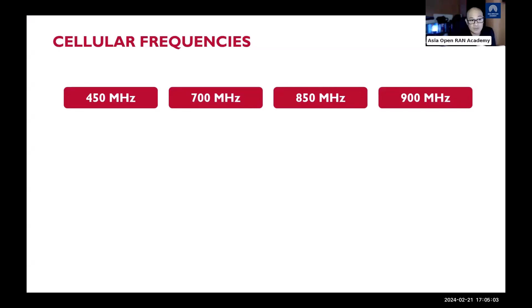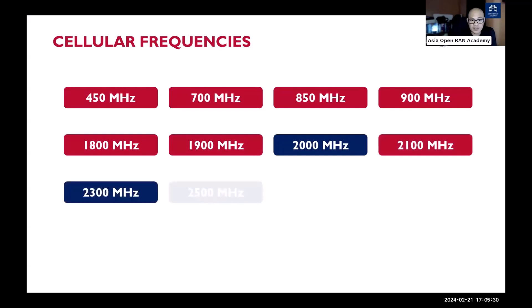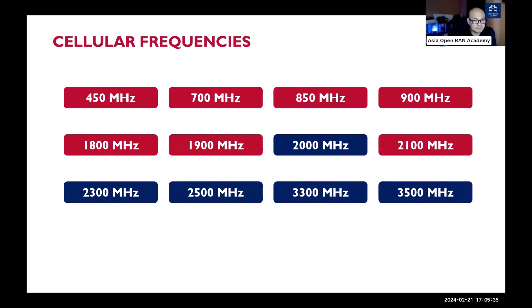Notice the difference between 450 MHz and 90.7 MHz. We also have 1800 MHz, 1900 MHz, 2000 MHz, 2100 MHz, 2300 MHz, up to 3500 MHz in the mid band. Red boxes represent Frequency Division Duplex (FDD) where uplink and downlink are separated by frequency, while blue boxes represent Time Division Duplex (TDD).